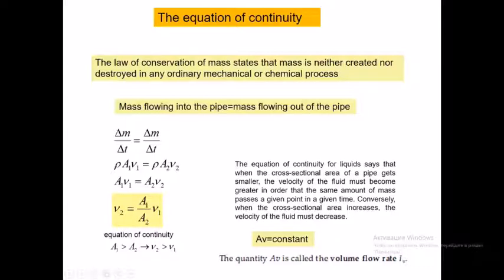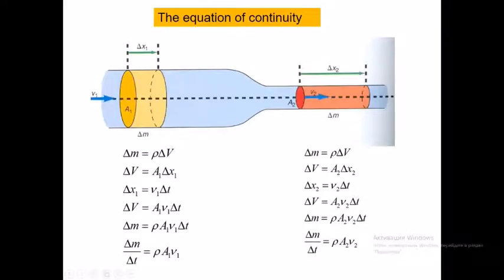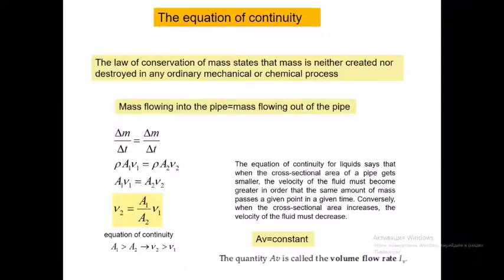From the equation of continuity we can find V₂ = (A₁/A₂) × V₁. Another form of the equation is Av = constant. This means the product of cross-sectional area and fluid velocity is constant throughout the flow.